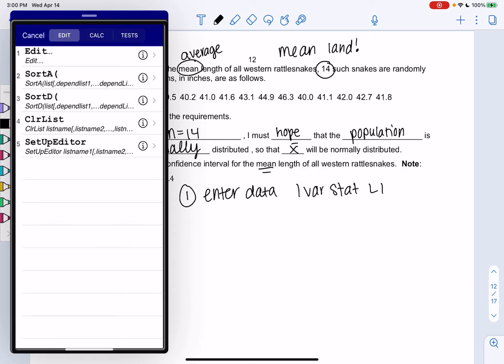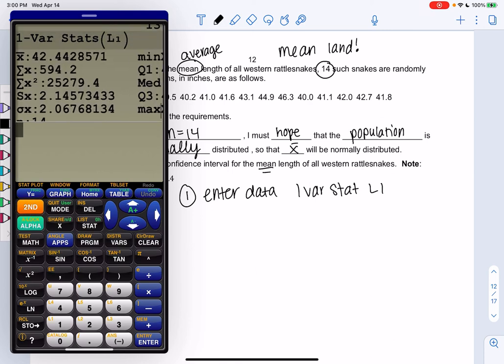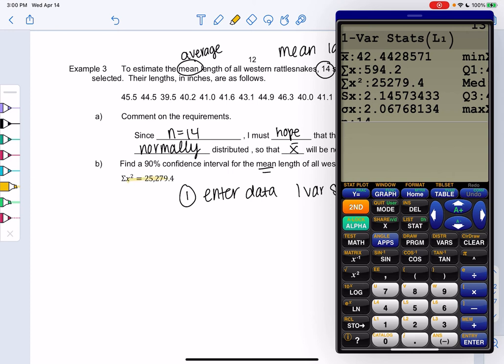So we'll go over to 1var stats, tell it to look at L1. And then we have this to just confirm we didn't make any typos. And you can see that we get 25279.4. So cool.